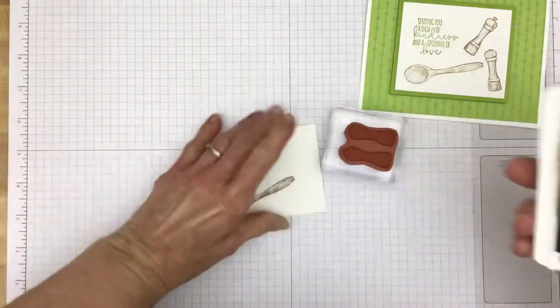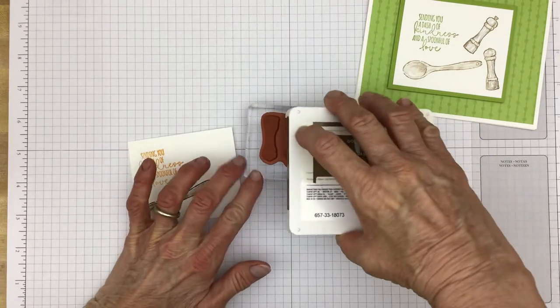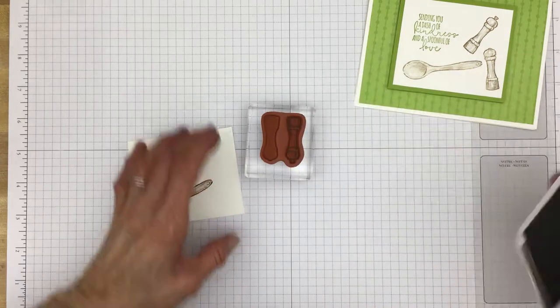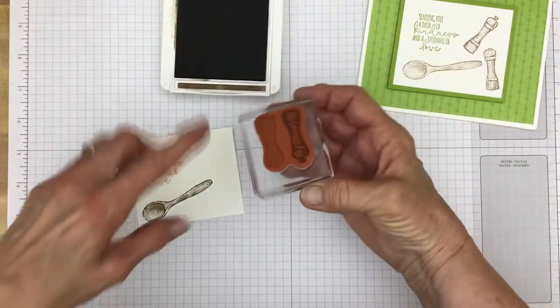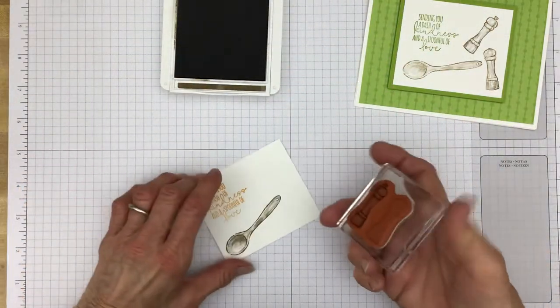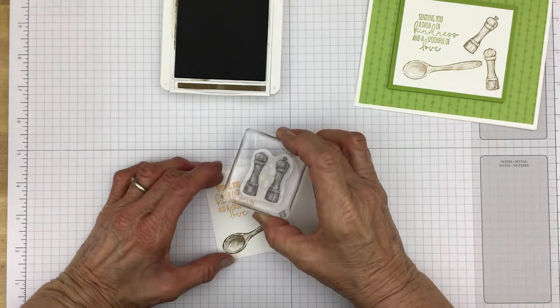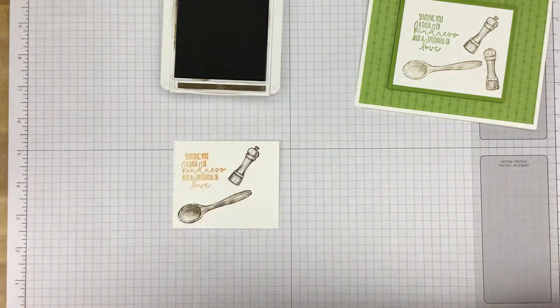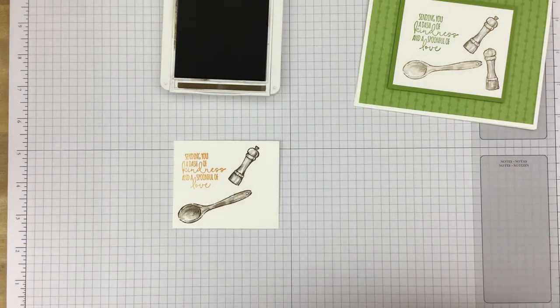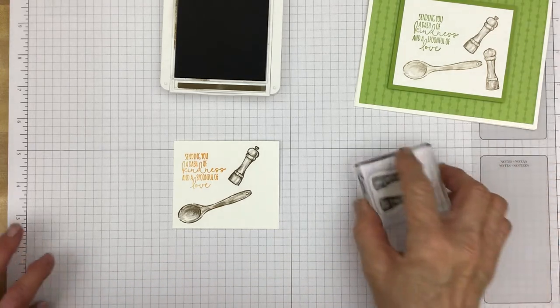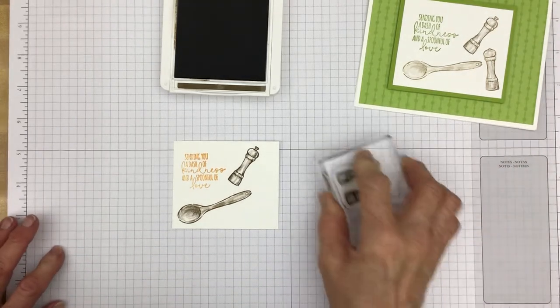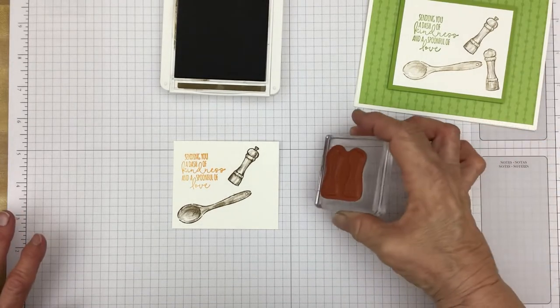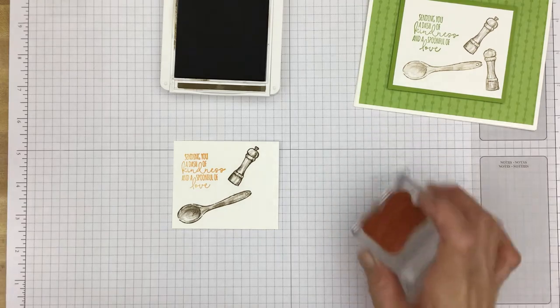So next we're doing the pepper grinder and the salt shaker. And the way I did those, I just did them one at a time. See if I can do this without getting my head in the way. So I just inked it, just the one side. Stamped it where I wanted it. And now I need to clean that stamp really well. And then I just stamp a few times on some scrap paper to make sure it's nice and dry. And if there's any other ink, it's all gone.